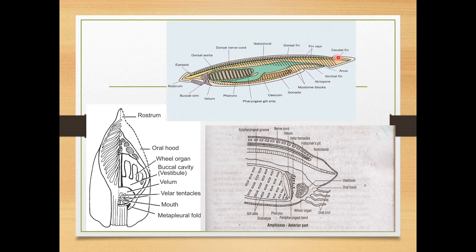When it moves, the tail region has a caudal fin, which then leads to a short ventral fin ending where the atriopore starts. Just behind the atriopore there is another opening called the anus, near the anterior part of the body.